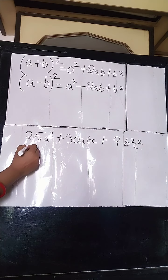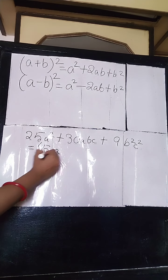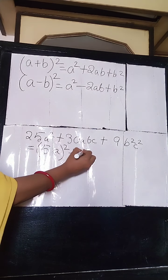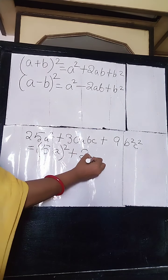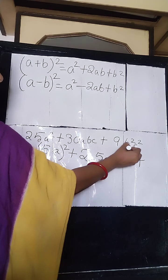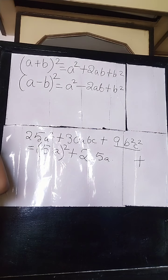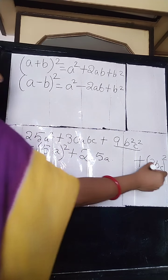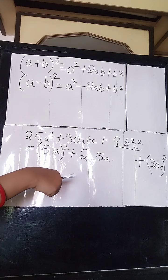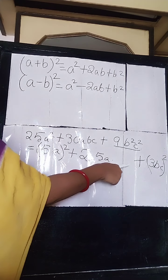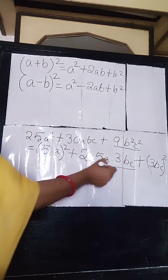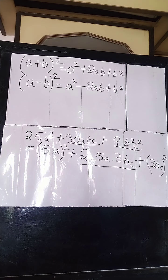Now 25a squared we know is the square of 5a. So we write 5a whole square plus 2 into 5a into the second term. The second term we don't know yet, so we look at 9b squared c squared, which is 3bc whole square. So 3bc is the second term, and we write 2 into 5a into 3bc in this sum.